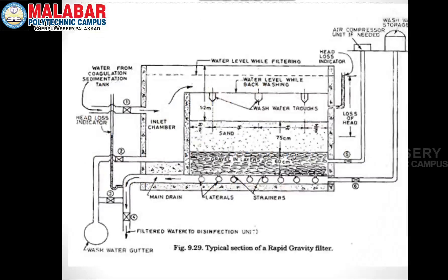The next type of filter is the rapid sand filter. It has an inlet chamber, a sand layer with a gravel layer and under-drain. It also includes a disinfection unit and a wash water storage tank. Impurities are removed using backwashing. This filter uses a percentage of wastewater storage, and the sand and gravel are cleaned the same way.